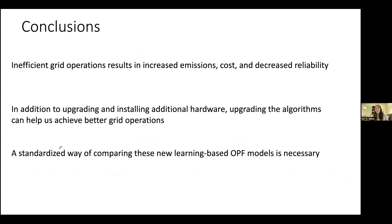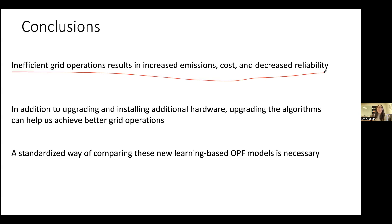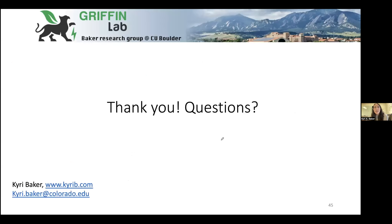To conclude: there's a lot of skepticism about whether software can help decarbonize the grid, but I argue there actually is room to reduce carbon emissions with a software upgrade. The last point is that we need a standardized way of comparing the literature — otherwise we're just writing papers in a vacuum and these methods will never make an impact. Thank you so much — I appreciate your attention, and I look forward to the questions.